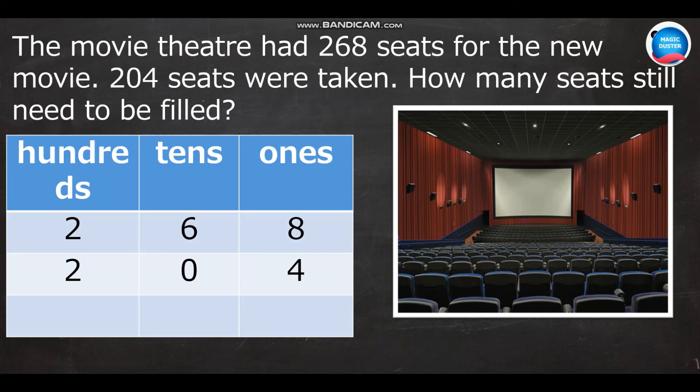As I start with the ones column: eight minus four is four. Six minus zero is six. And two minus two is zero. So, the answer is sixty-four. What is the meaning? Still, sixty-four seats are remaining. Tintu, is the answer correct?